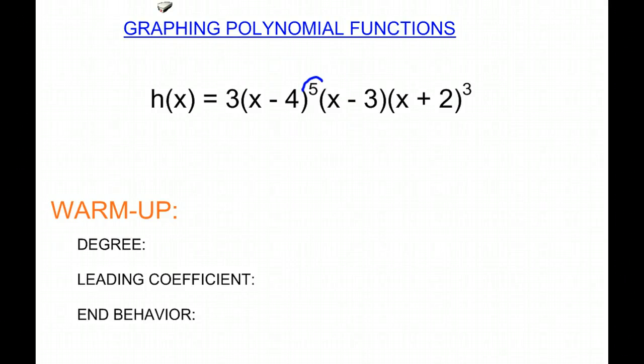So we have to add up all of our exponents. And remember that there is a 1 there. So we add up all our exponents and we get 9. So our degree is 9, which is odd.